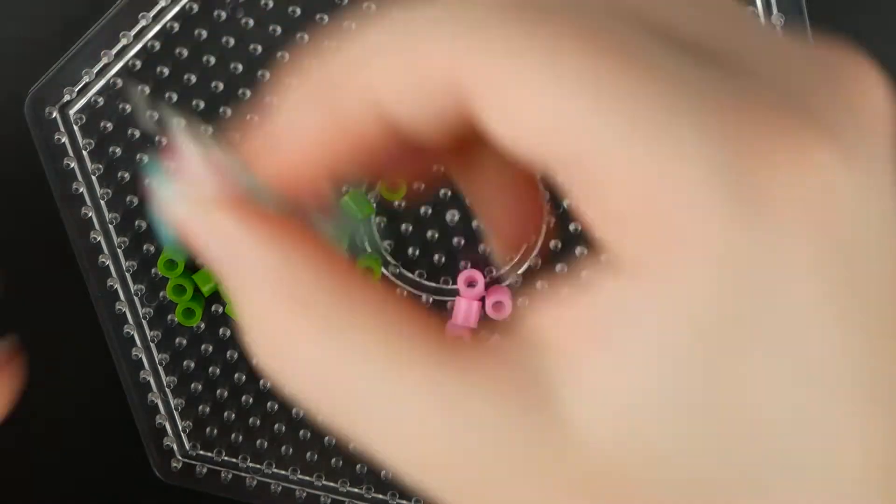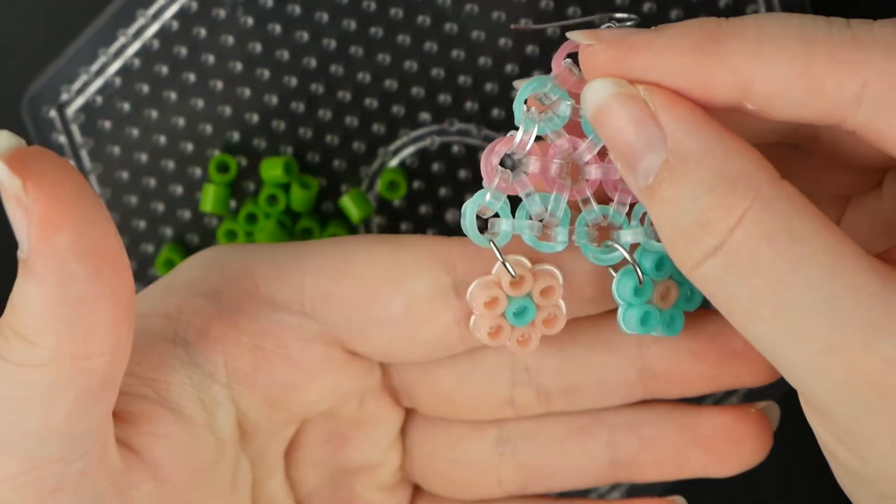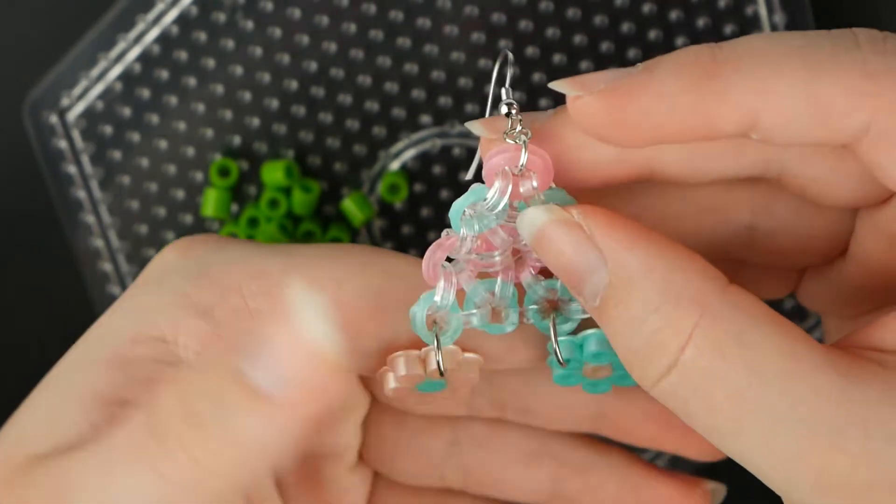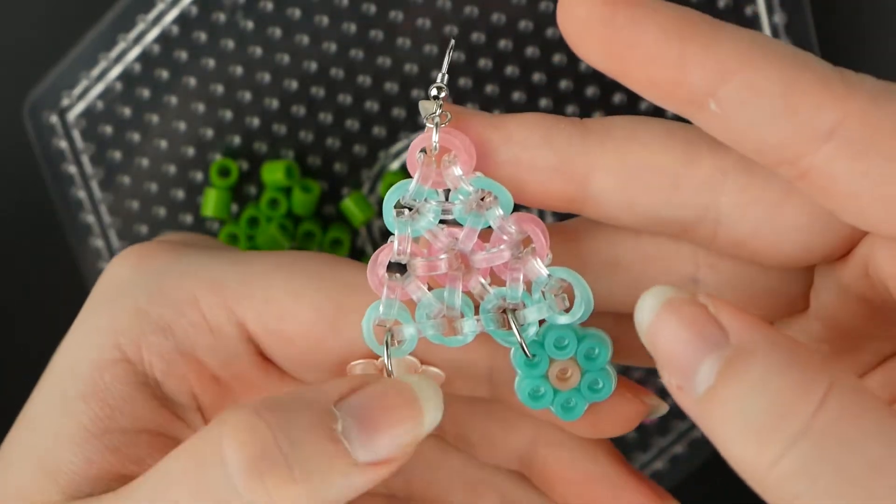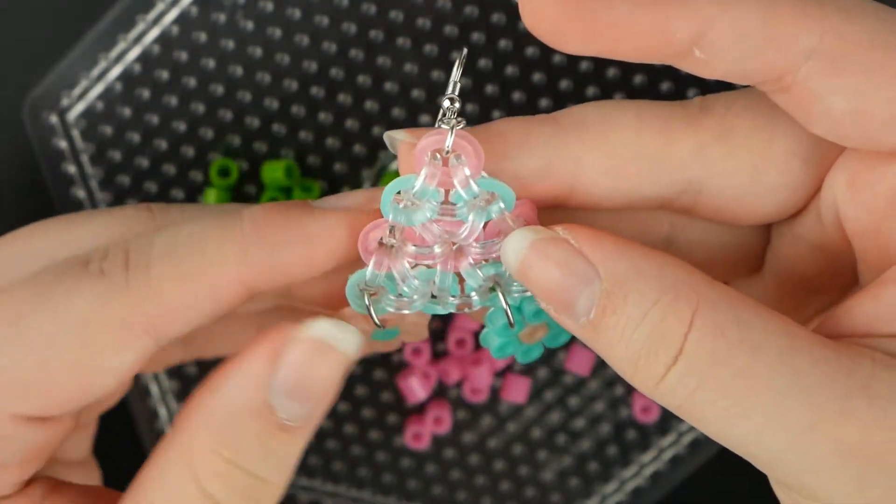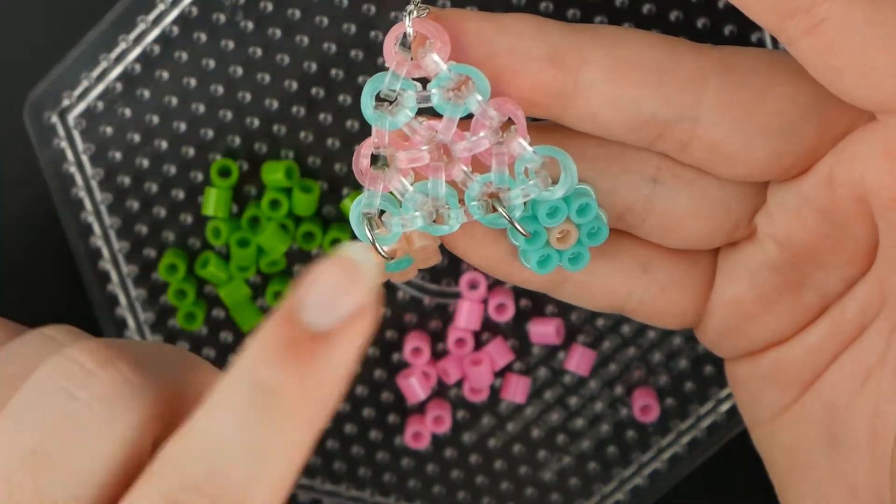The first thing we're going to need to do is make the flowers. For these ones, I just made two flowers. Since there's four spots, they kind of end up off-centered. What I'm going to do is just put flowers on this band and this band on the one we're making right now.